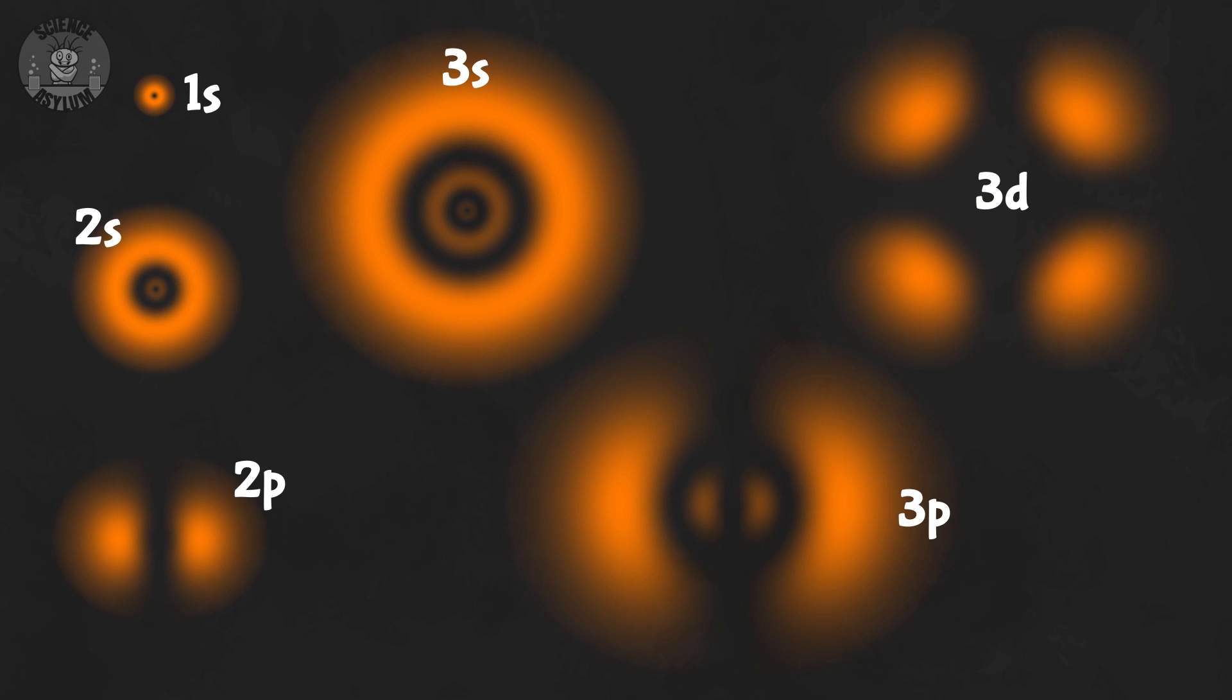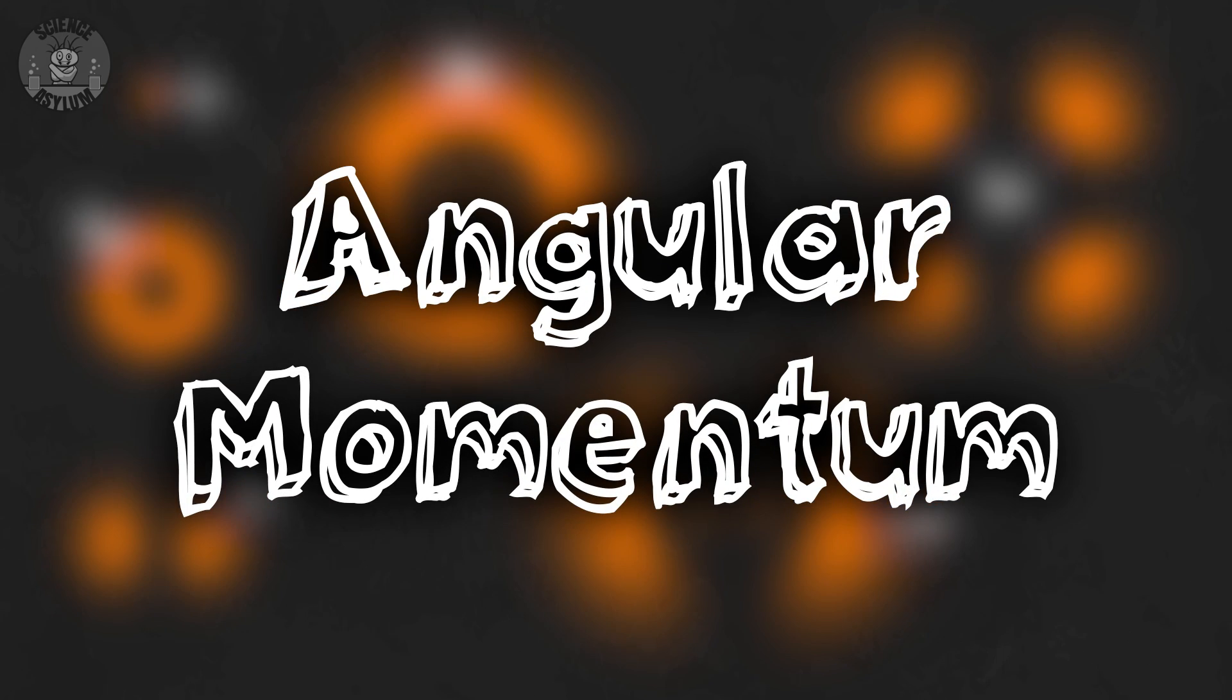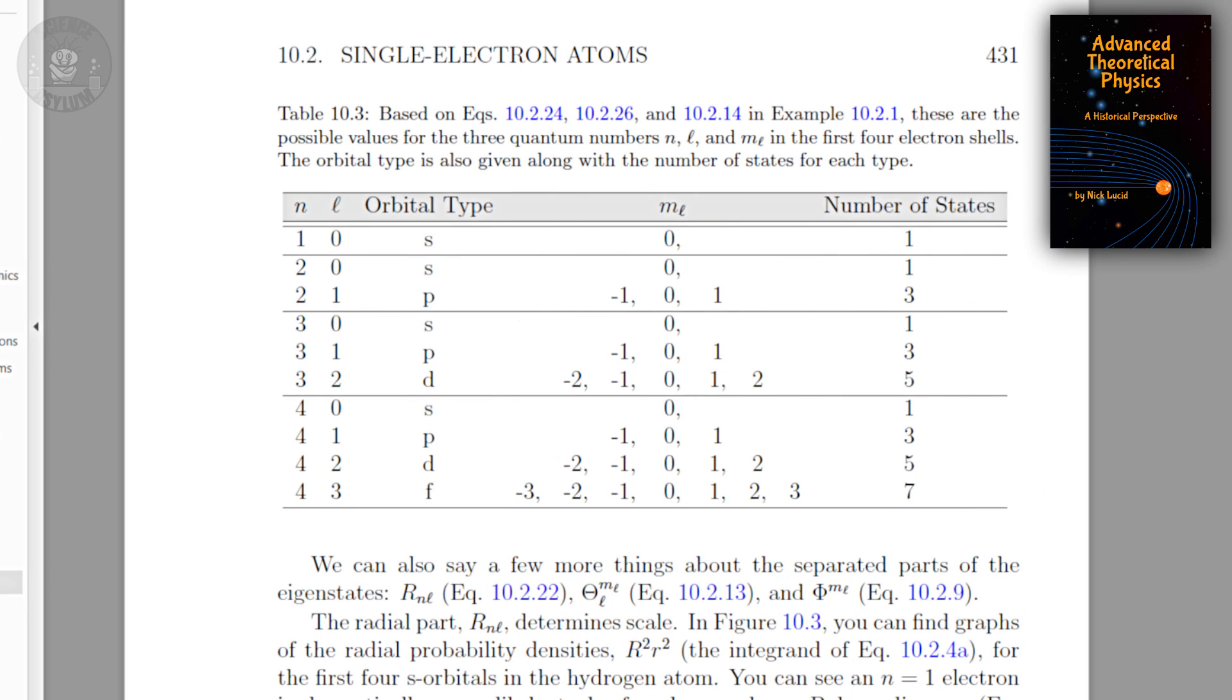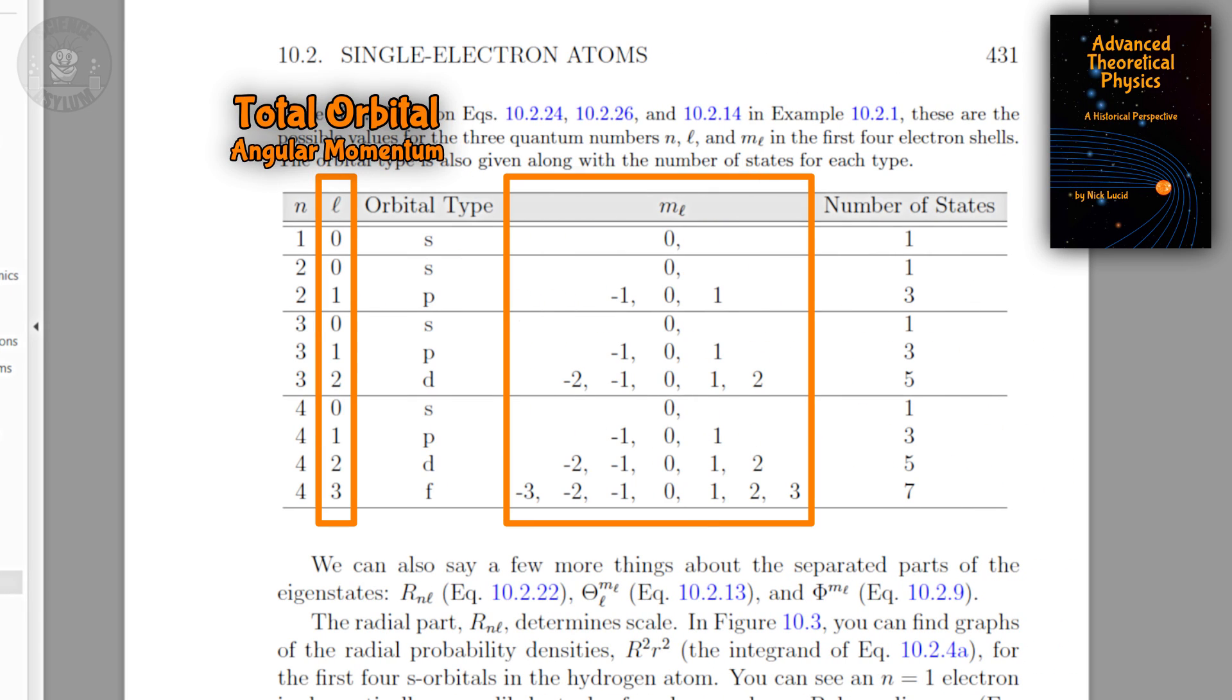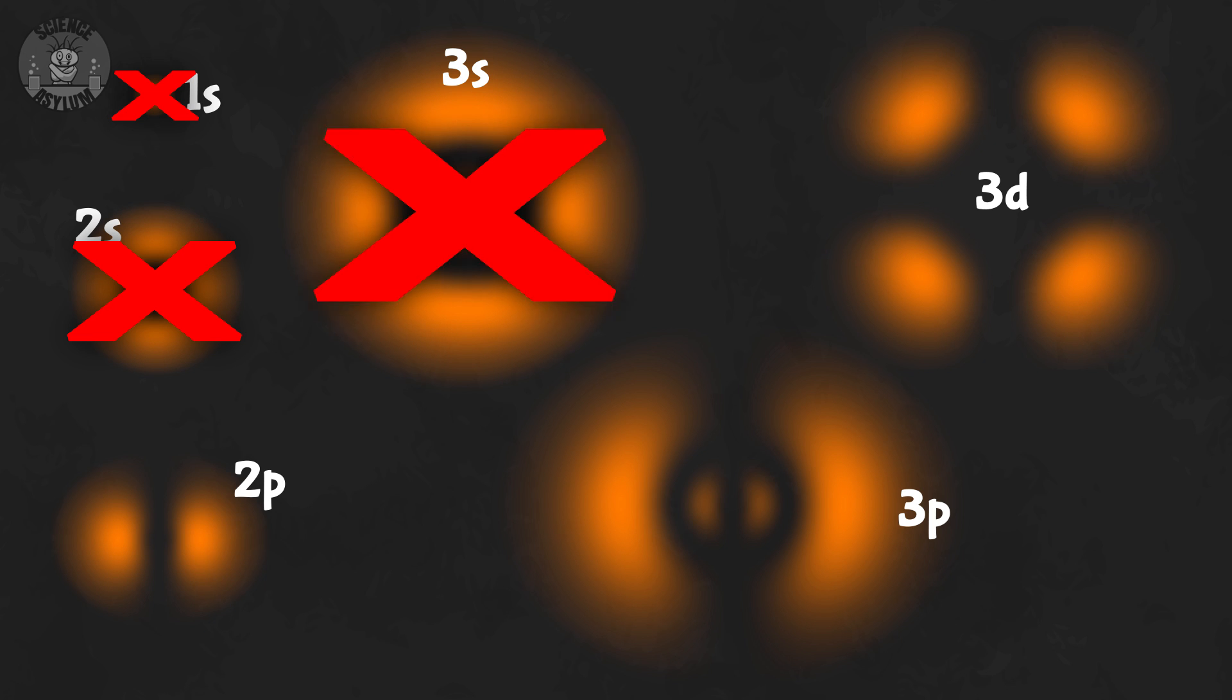The property the electrons have in these orbitals is angular momentum. In fact, we can measure both the total amount and the orientation, at least along one direction. Just having that property is enough to make it a tiny magnet. Any electron with a non-zero angular momentum will act like a tiny magnet.